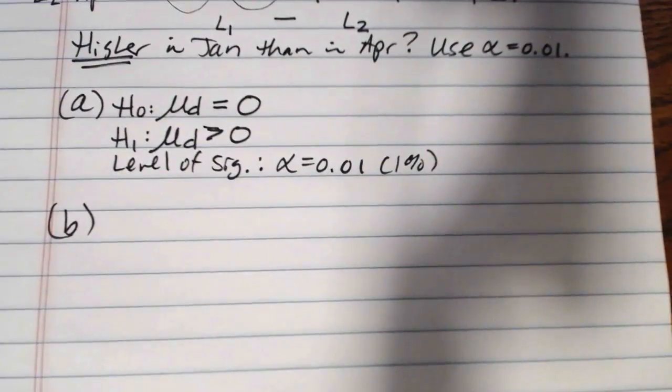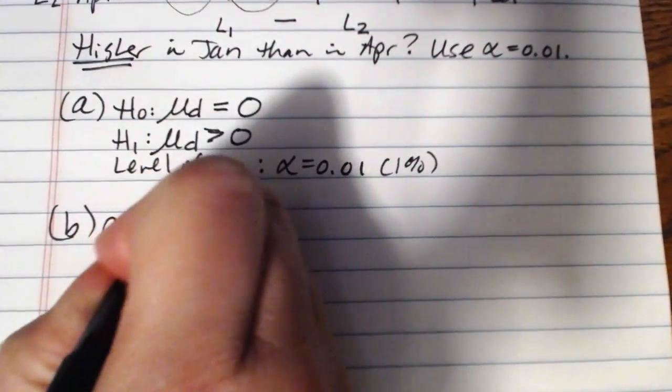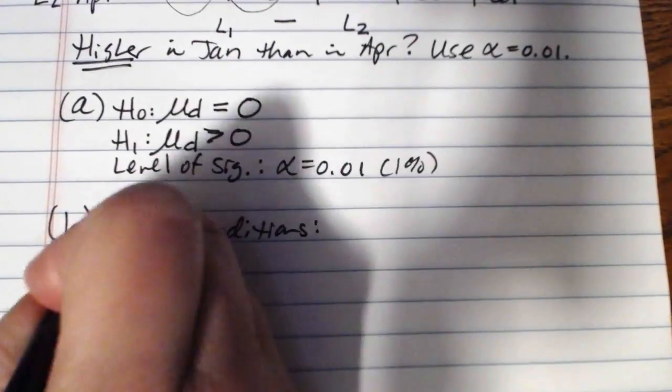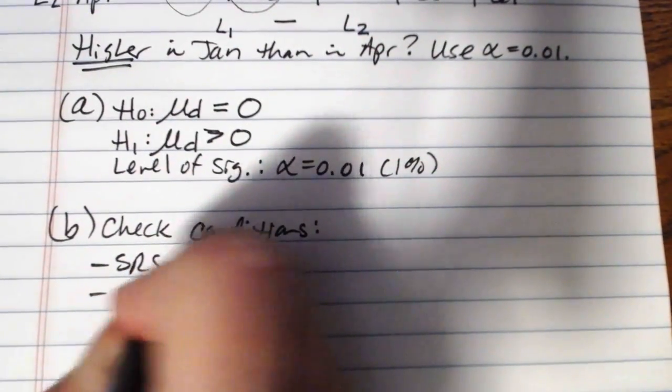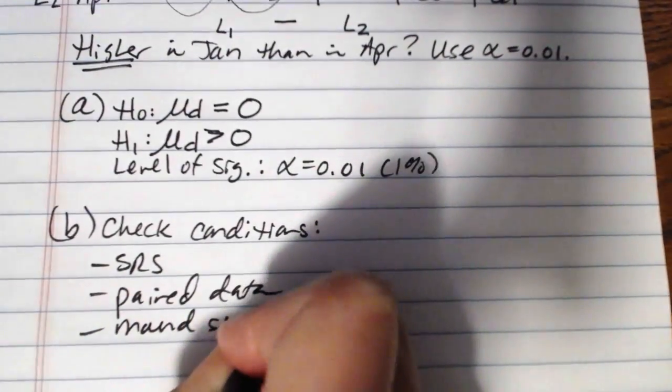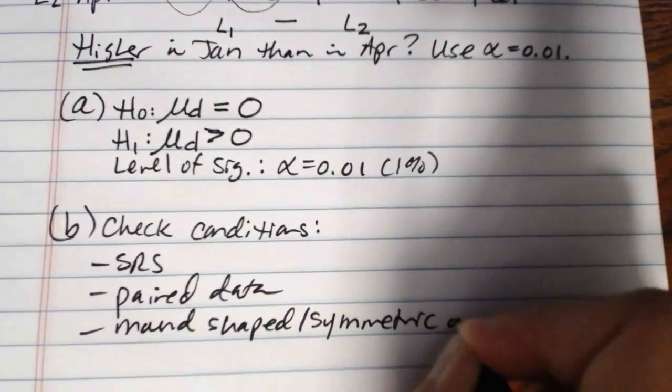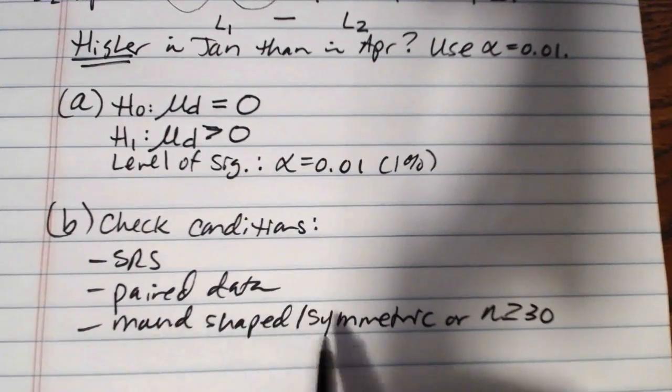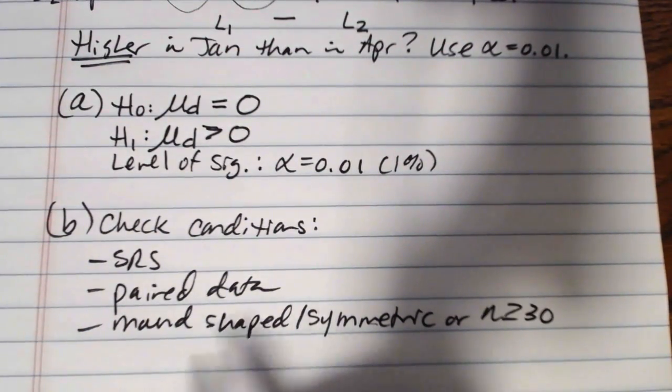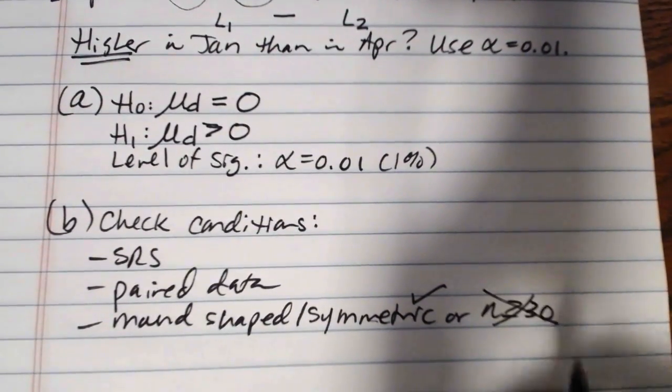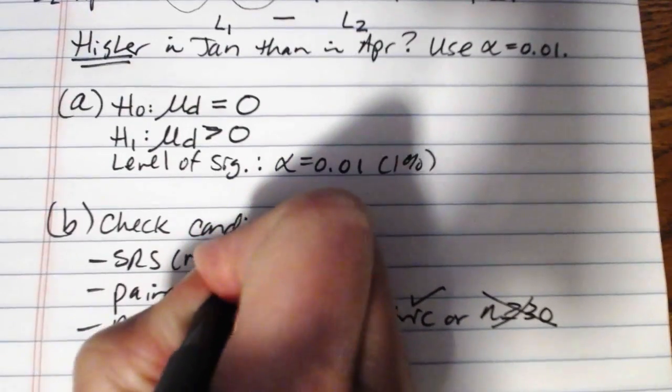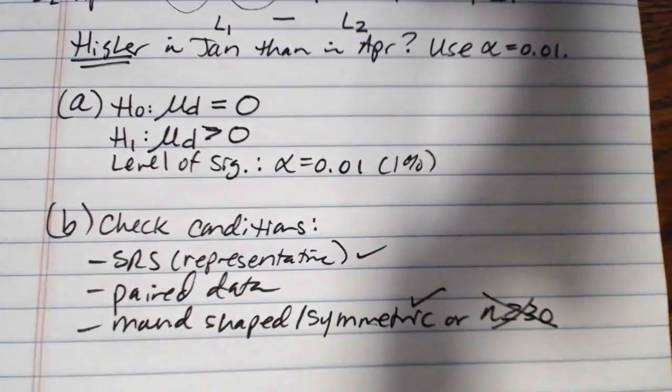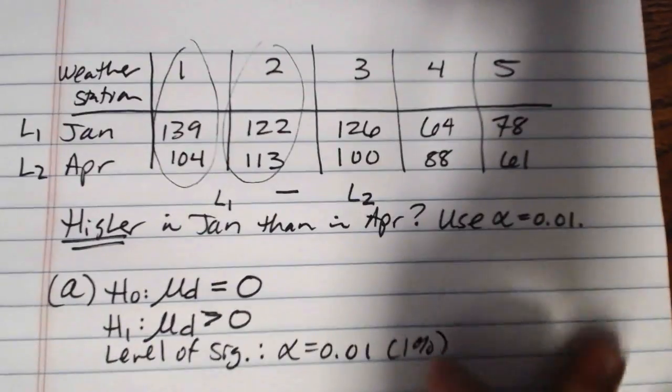Now, in part B, this is where we check our conditions. We need a simple random sample. We need paired data. And then we need mound-shaped and symmetric. Or n greater than or equal to 30. For this particular problem, we were told to assume that the differences follow a mound-shaped and symmetric distribution, which is good, because we did not have 30 different weather stations reporting. Simple random sample. Here, it's never really stated that the sample is random, but it's certainly representative. So, we can take that as assumed, and the data are paired. They are paired by weather station, and we can see that pairing here. So, our requirements are met.